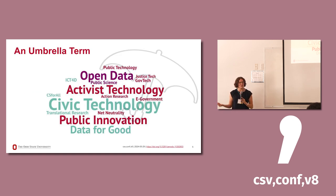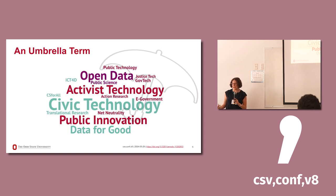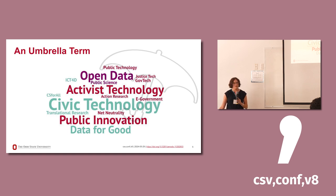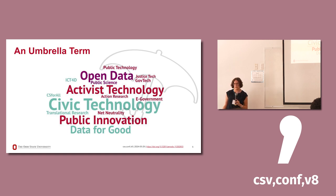Two, it might sound a little bit familiar. I created a word cloud with some of the other terminology you may be used to using: civic tech, activist technology, open data, gov tech, public innovation, data for good — there are tons of these. That being said, I do think public interest tech is a little bit different in that it offers the opportunity to have an umbrella term broader than any of these alone, and it's broader in multiple ways. For one, it doesn't focus on any type of technology.